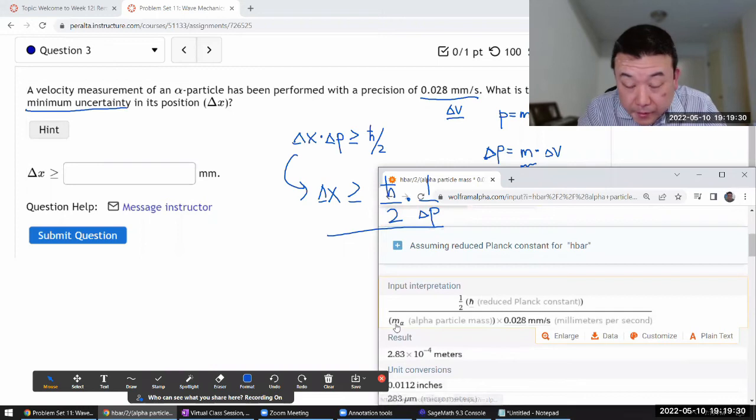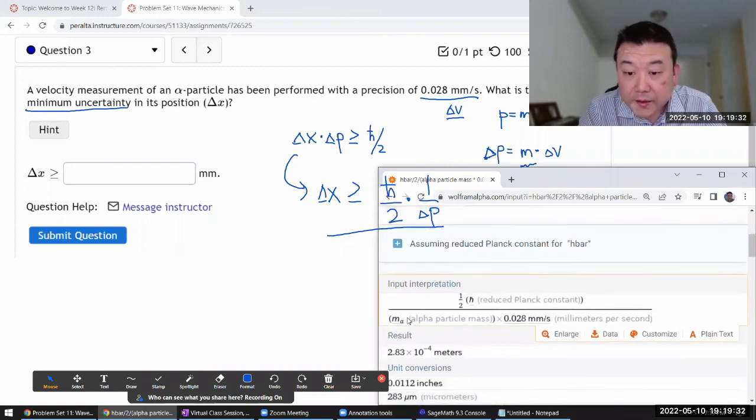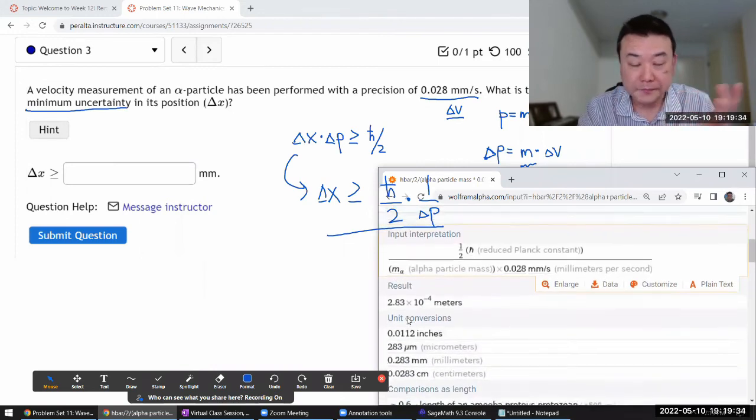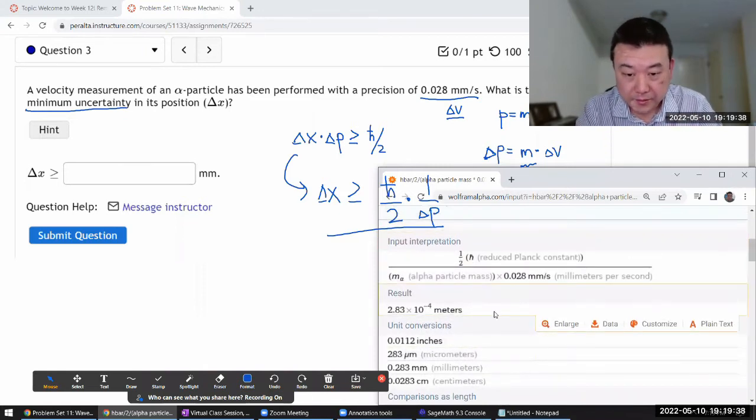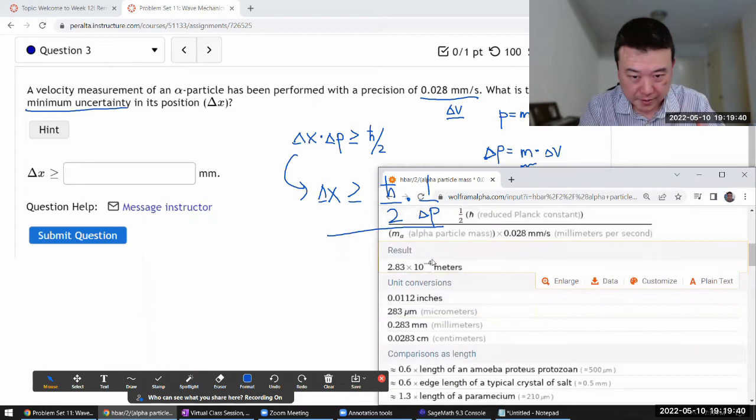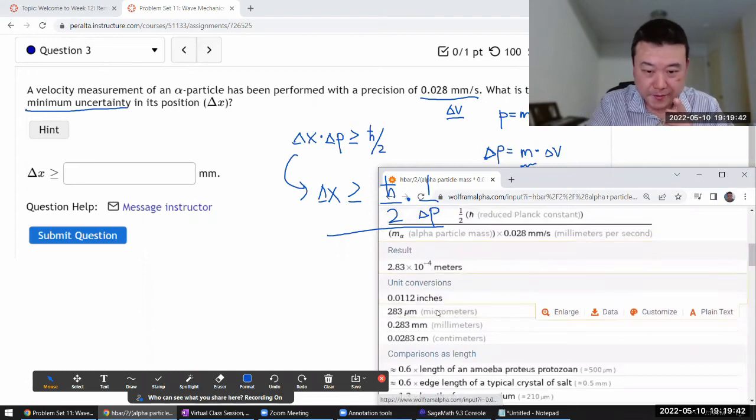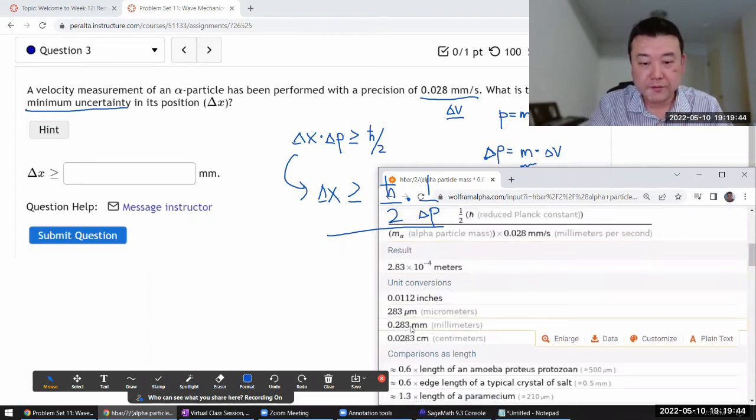Oh yeah, it has alpha particle mass. Wow, that's amazing. That's great. Yeah, I think that all looks right. And the end result is in the unit that we are expecting, 0.283 millimeter.